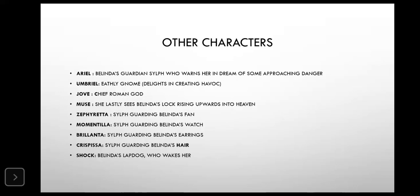Among the supernatural characters, first of all is Ariel. Ariel is the guardian sylph who warns Belinda in a dream of approaching dangers — a kind of foreshadowing. Ariel's name comes from the spirit in Shakespeare's The Tempest on the island, and the same spirit is used here.